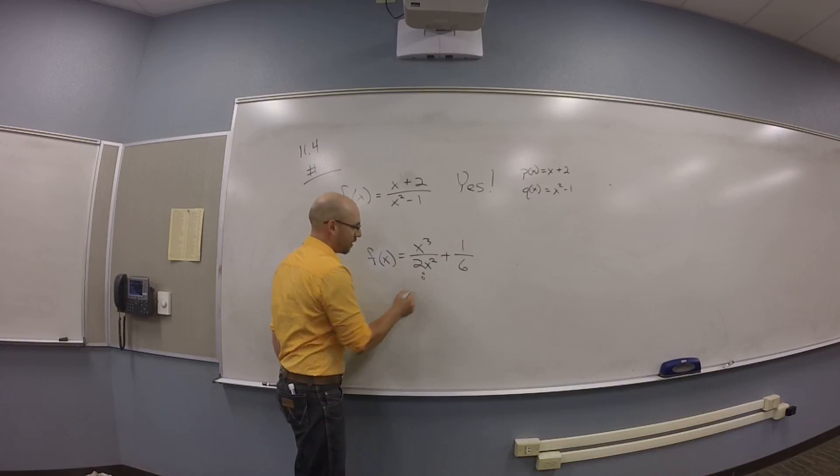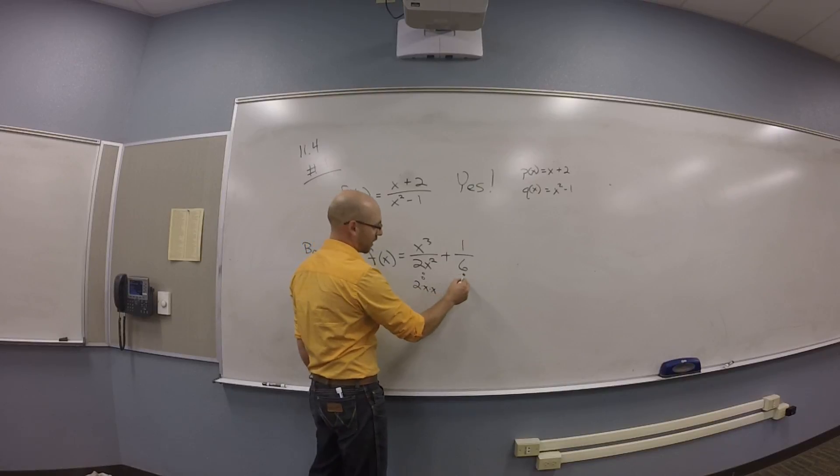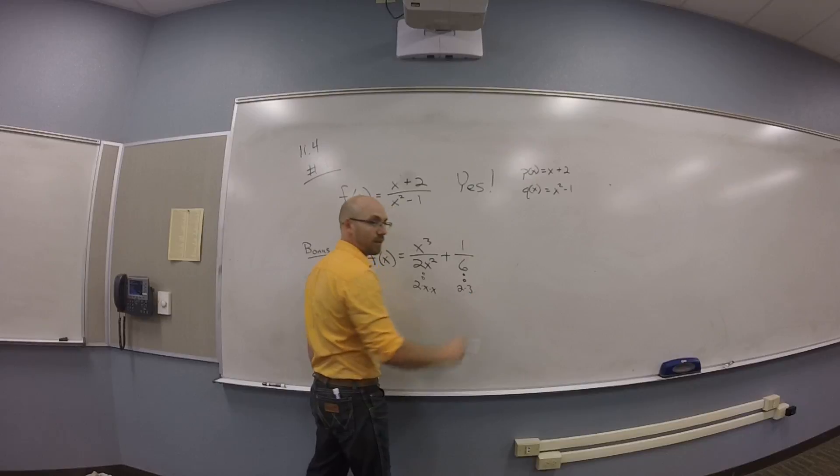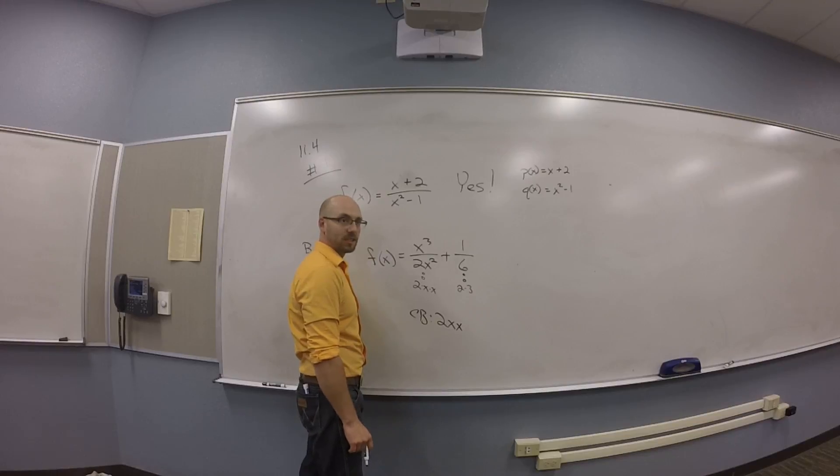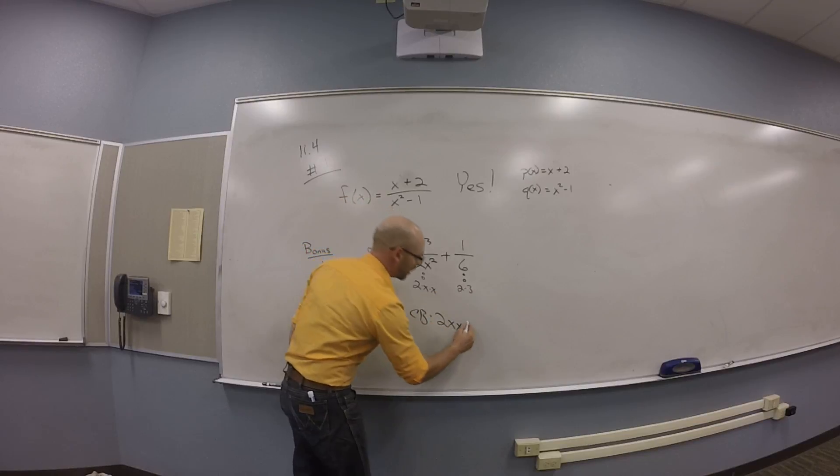Like on this part, looking at 2X squared, you need a 2 and then an X and an X. And looking at 6, you need a 2 and a 3. Right. So your common bottom, worst case, you need a 2, a pair of X's, and then to account for the 6, you need yet another.